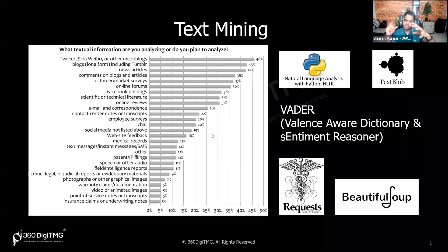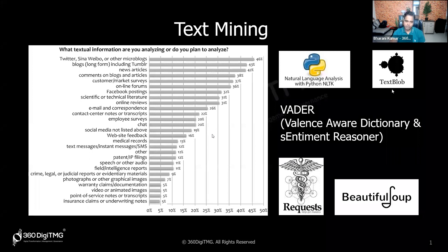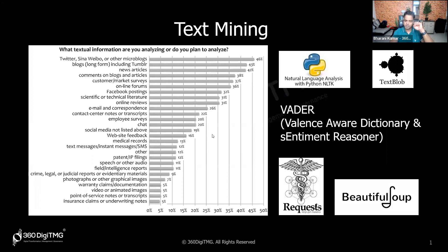To accomplish these tasks, you have many Python libraries. Libraries contain code that someone else has already written — you just reuse it. Key libraries include NLTK (Natural Language Toolkit), TextBlob, VADER (Valence Aware Dictionary and Sentiment Reasoner) for extracting emotions, Requests for scraping data from URLs, and BeautifulSoup for extracting data from HTML.